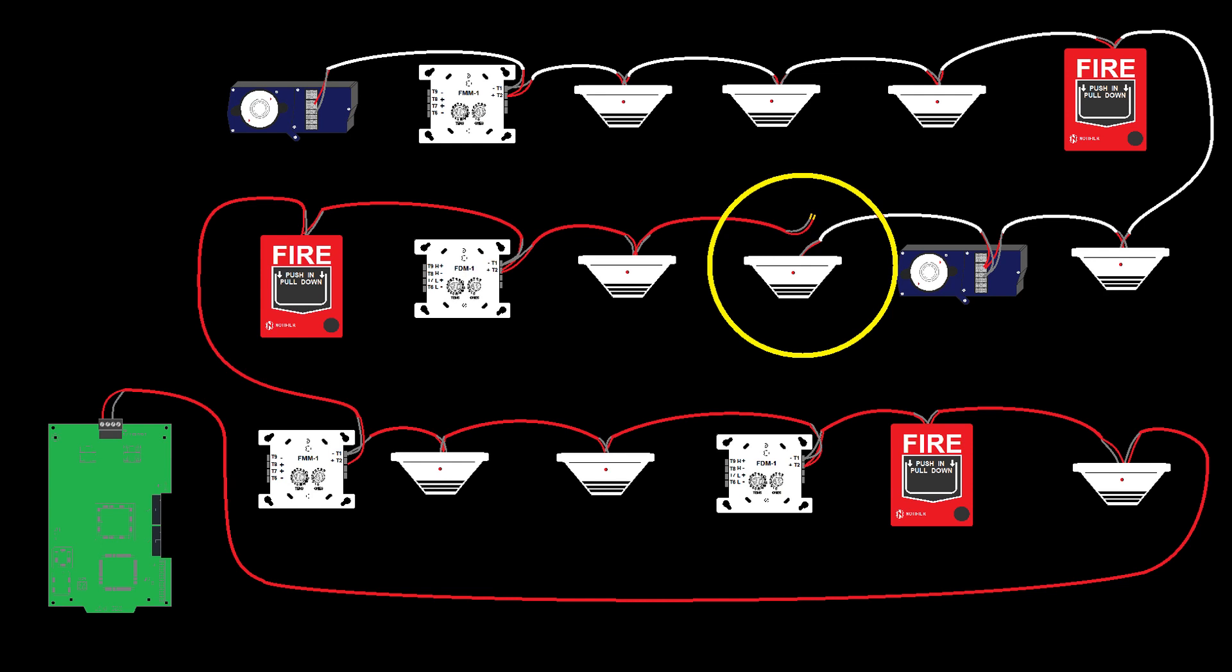Once we add this return leg back in to make the circuit a style 6 loop, that problem goes away. When a loop is configured for style 6, it sends its SLC communication signal out of both the B side and the A side of the card. So if there's an open circuit on any single wire, or even any pair of wires as we have here, all of the devices on the loop will still be able to communicate with the panel.